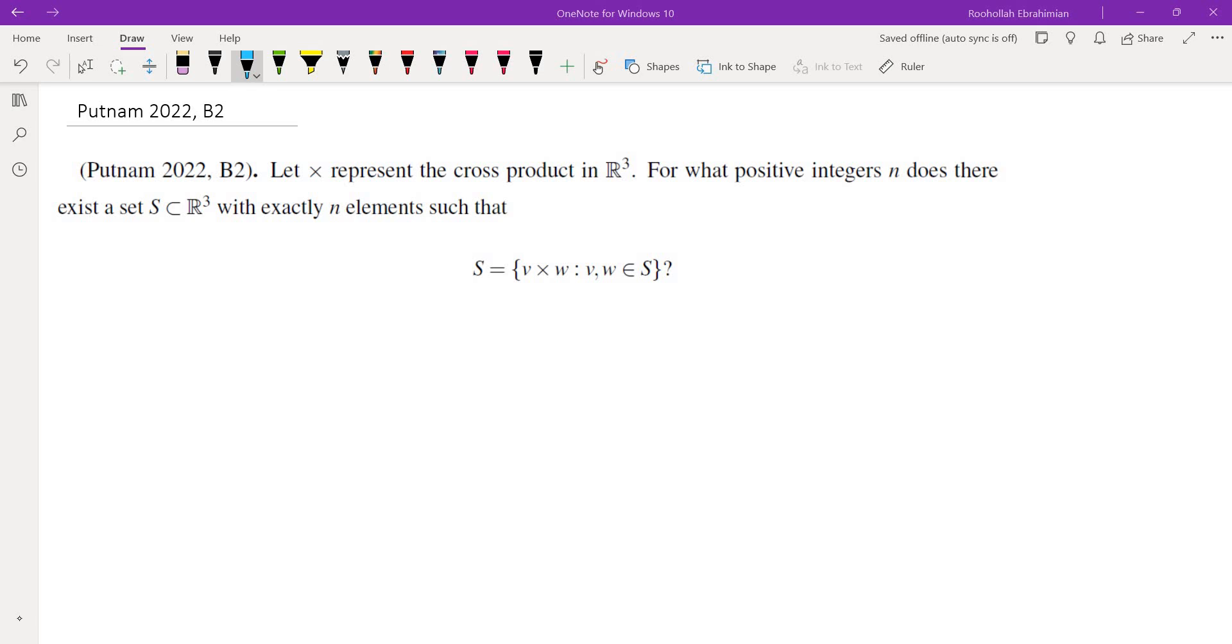The question is asking us to find all values of N such that there is a subset of R³ with exactly N elements in a way that S is equal to the set of V cross W such that V and W are in S, and this is just the usual cross product.